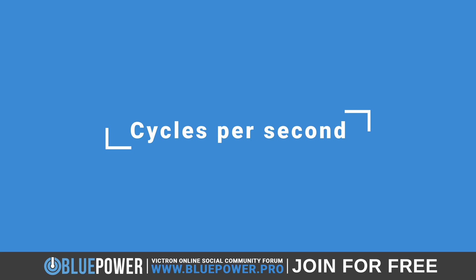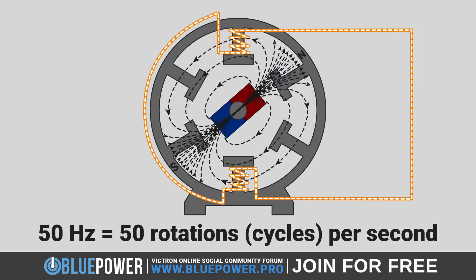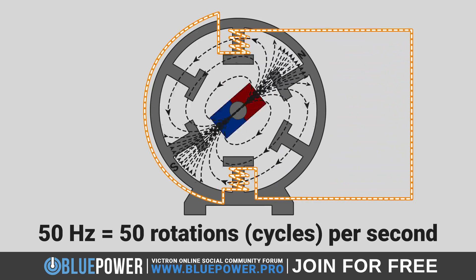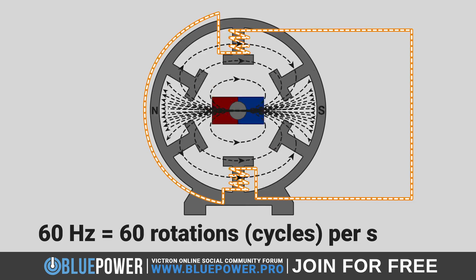Let's go back to our basic magnetic AC generator to look at how cycles per second are measured. The term 50 Hertz indicates that the magnet undergoes 50 complete rotations each second. Similarly, 60 Hertz means that the magnet performs 60 rotations every second.